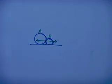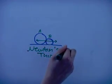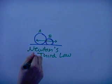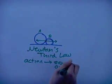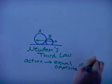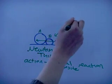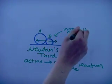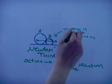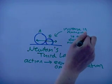When objects collide, they exert an equal force but in opposite directions, which is stated in Newton's Third Law: for every action there is an equal and opposite reaction. The increase in momentum of object B is equal to the decrease in momentum of object A.